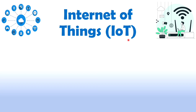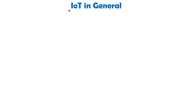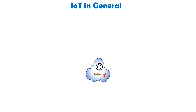Let's begin with an introduction to IoT. To start, let's discuss IoT in a broader sense. The term IoT stands for Internet of Things, which comprises two words: Internet and Things. Now we are all familiar with the Internet — a powerful network that allows us to connect devices like tablets, mobile phones, and laptops.